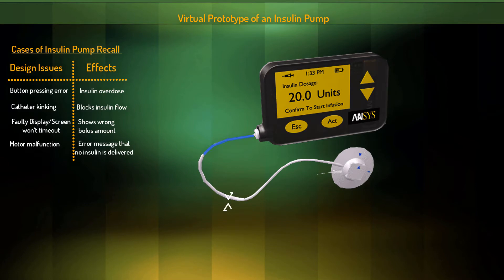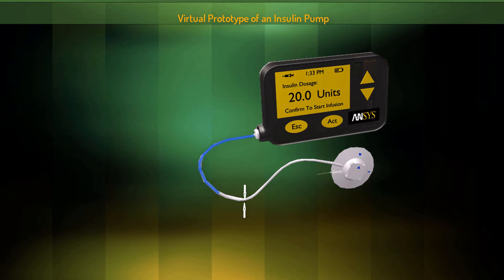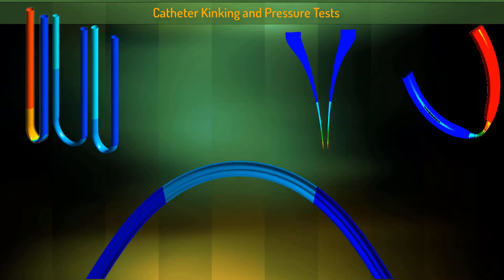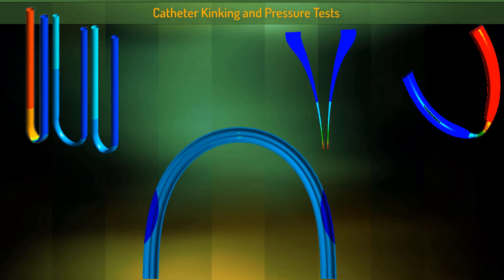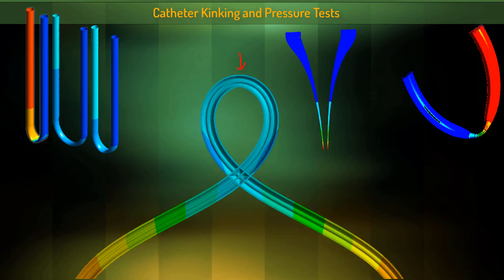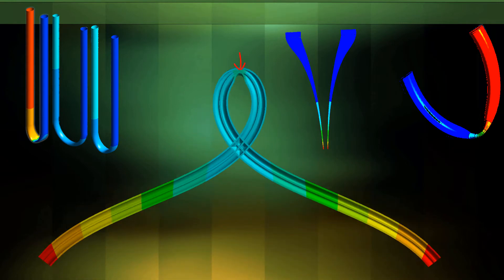A patient may not receive insulin if the flow path is obstructed due to catheter kinking. This is one of the primary modes of failure of insulin pumps. Mechanical and fluid flow analyses from ANSYS can help you detect and prevent this failure from occurring.